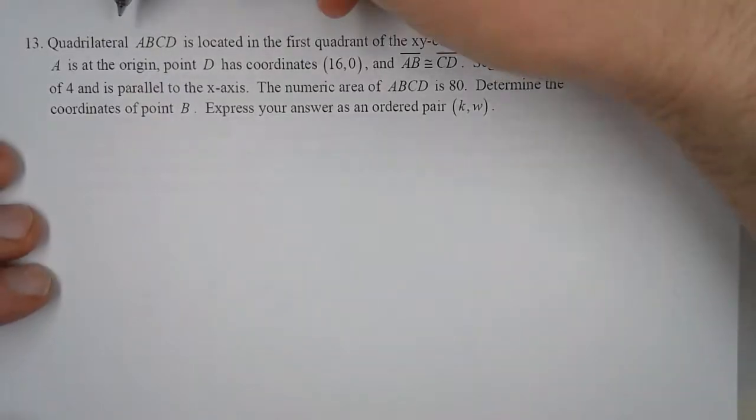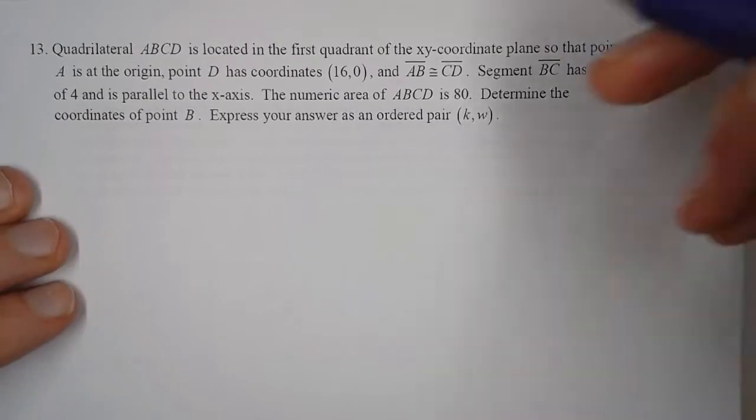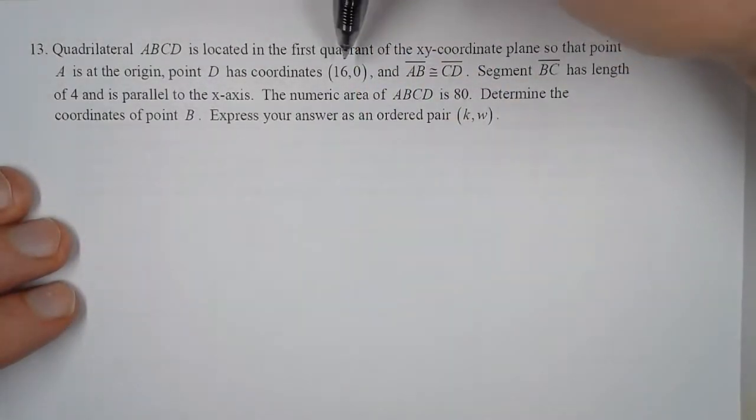In this problem, we have quadrilateral ABCD located in the first quadrant, so that point A is at the origin, point D has coordinates (16, 0),